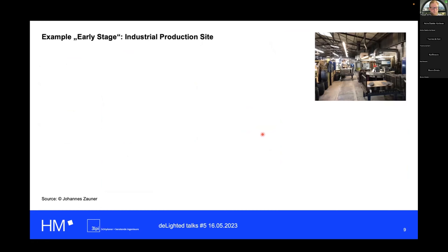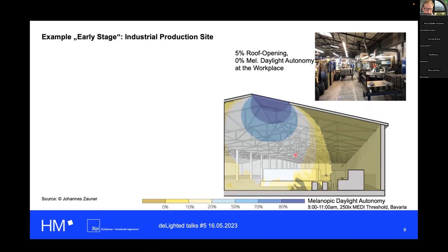Here we have a very simple daylight situation in an industrial production site. It's not pretty and it will never be, but it's important because people are working here day and night. We were asked how we would improve the daylight situation should the roof be renewed in a few years. Here is our analysis of the current situation: 5% of the roof area is openings, positioned on the crest above a traffic area.